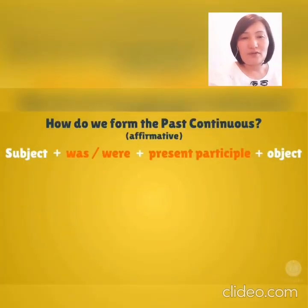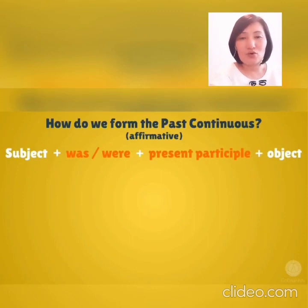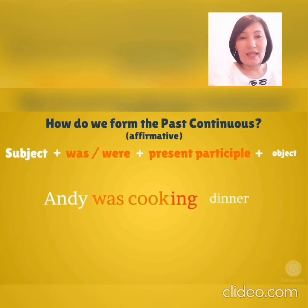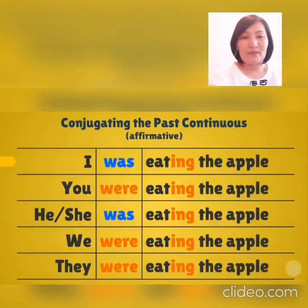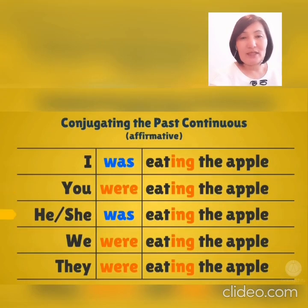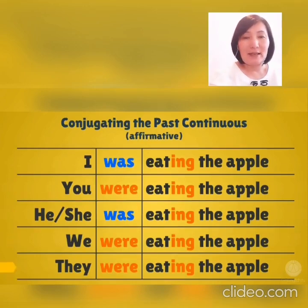How do we form the past continuous affirmative? Subject plus was/were plus present participle plus object. For example: Andy was cooking dinner. I was eating the apple. You were eating the apple. He or she was eating the apple. We were eating the apple. They were eating the apple.